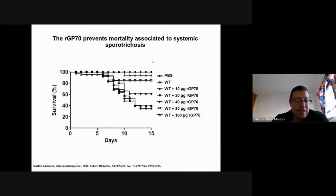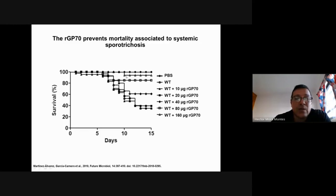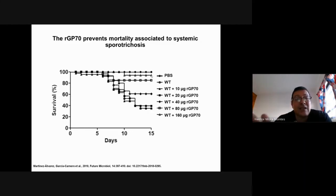The interesting finding about GP70 is that if we pre-treat Galleria mellonella by injecting this recombinant protein and then challenge the animals with Sporothrix schenckii, they become more resistant. There is an increment in animal survival as we increase the doses of this recombinant protein. This may indicate that using this protein to inoculate mammals like mice could potentially help control animal sporotrichosis.